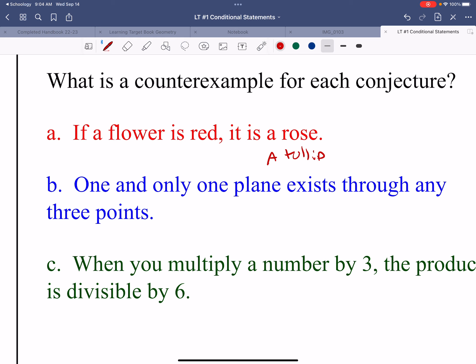One and only one plane exists through any three points. Well, what we know is if those three points are collinear, then we get multiple planes. So if we were to say one and only one plane exists, that would be false because if the points are collinear, you get multiple planes.